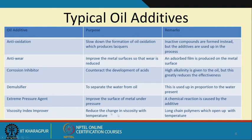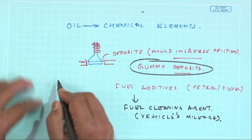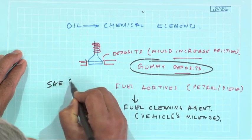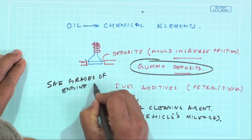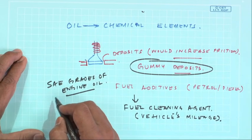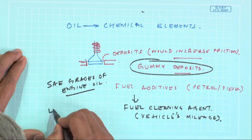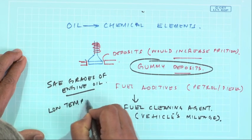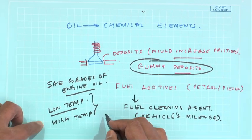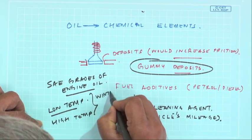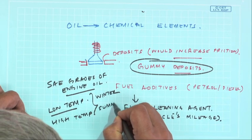A demulsifier is used to separate water from oil. The viscosity index, which is the rate at which viscosity changes with temperature, can be stabilized using a viscosity index improver. You may recall that engine oils have SAE grades based on their viscosity index — at low ambient temperatures a different grade is used than at high ambient temperatures, like a particular oil for winter and another for summer.